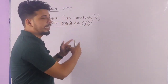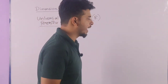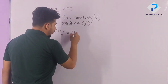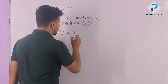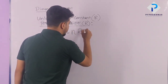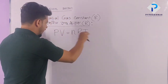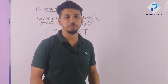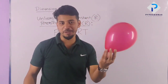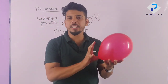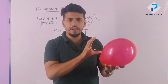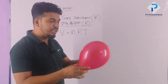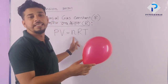Now I will write the dimension of the Universal Gas Constant R. For an ideal gas, PV equals nRT, where P is pressure, V is volume, n is the number of moles, R is the universal gas constant, and T is temperature.